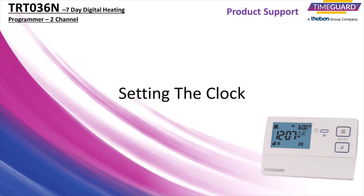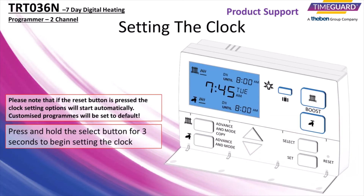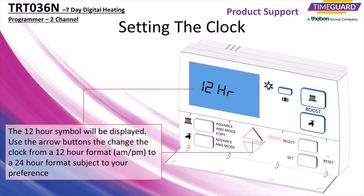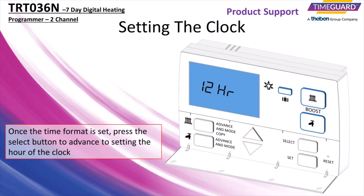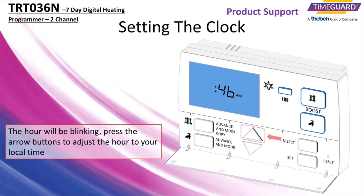Set the clock for your device. Press and hold the select button for 3 seconds to begin setting the clock. The 12-hour symbol will be displayed. Use the arrow buttons to change the clock format from a 12-hour format to a 24-hour format subject to your preference. Once the time format is set, press the select button to advance to setting the hour of the clock. The hour will be blinking. Press the arrow buttons to adjust the hour to your local time.